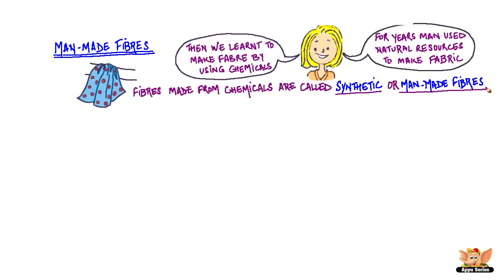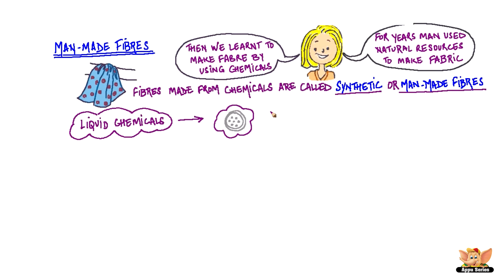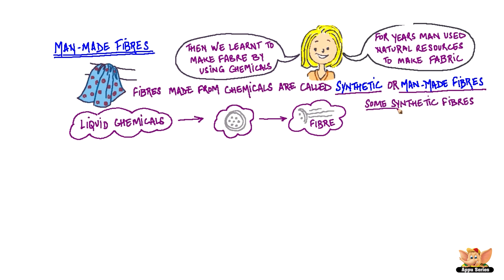These man-made fibers are made by forcing liquid chemicals through small openings and letting them dry and harden into fiber. Some examples of synthetic fibers are nylon, rayon, polyester, etc.